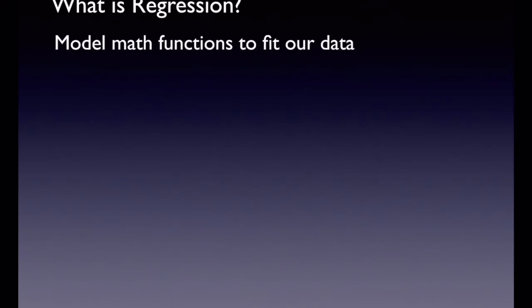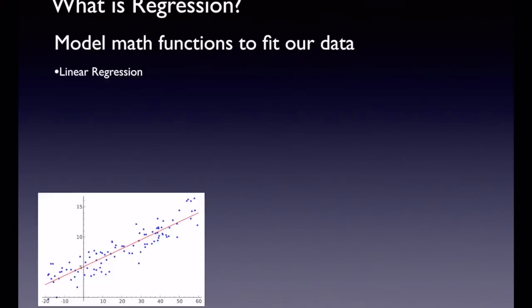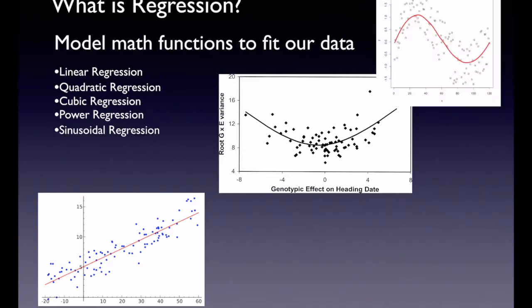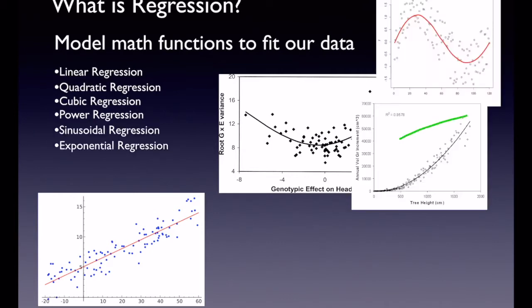So in terms of what is regression: regression is when we take math functions — functions you've talked about in some previous math class — and we overlay them on our data, so we fit them to our data. We really focused on linear regression in Chapter 12. We touched on quadratic regression, but it goes so much further than that. You can do cubic, quartic, things to the fifth power. If you've done trig, you can actually do sinusoidal regression. Exponential regression is really popular because a lot of things, especially out in nature, grow exponentially.